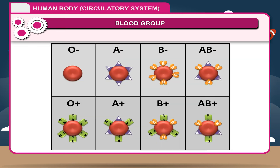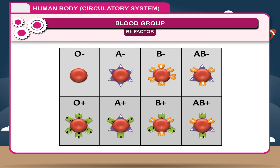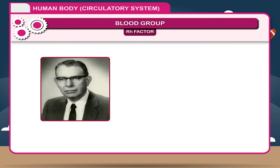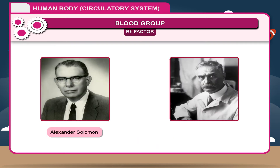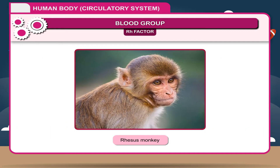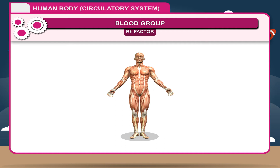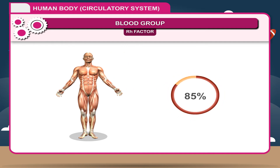Rh Factor: besides the ABO blood groups, there is another antigen factor called the Rh factor, which is found on the surface of RBCs. It was discovered by Alexander Solomon and Karl Landsteiner in 1937 in the Rhesus monkey. Most people have the Rh factor in their blood and are called Rh positive. About 85% of humans are Rh positive and the rest are Rh negative.